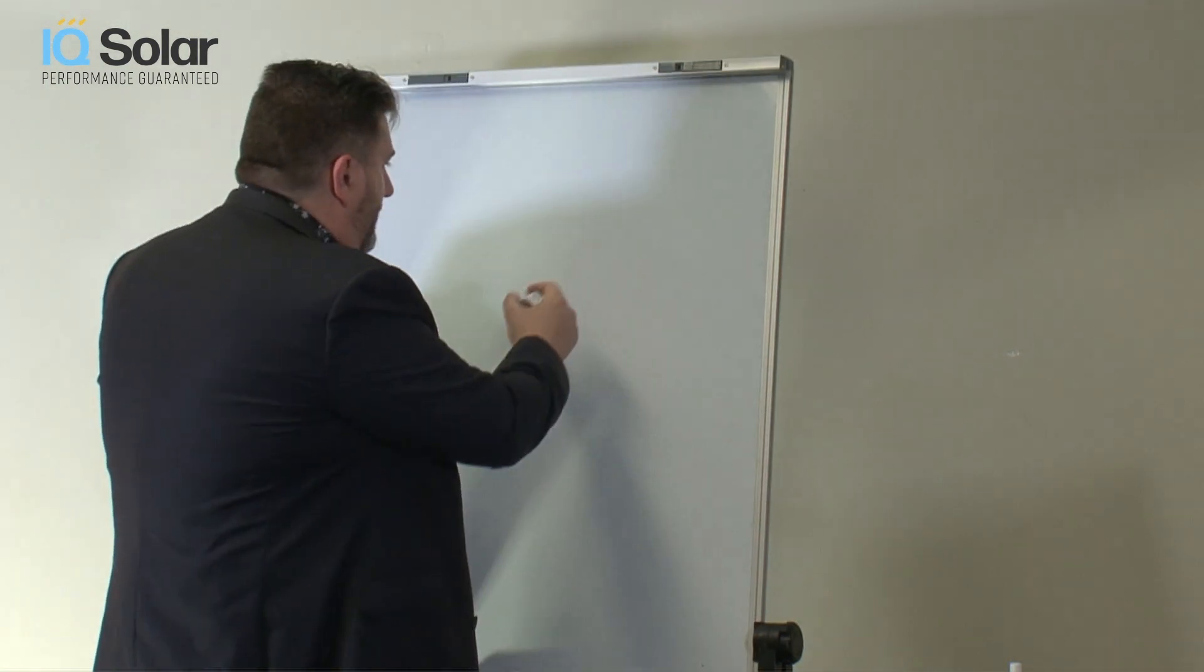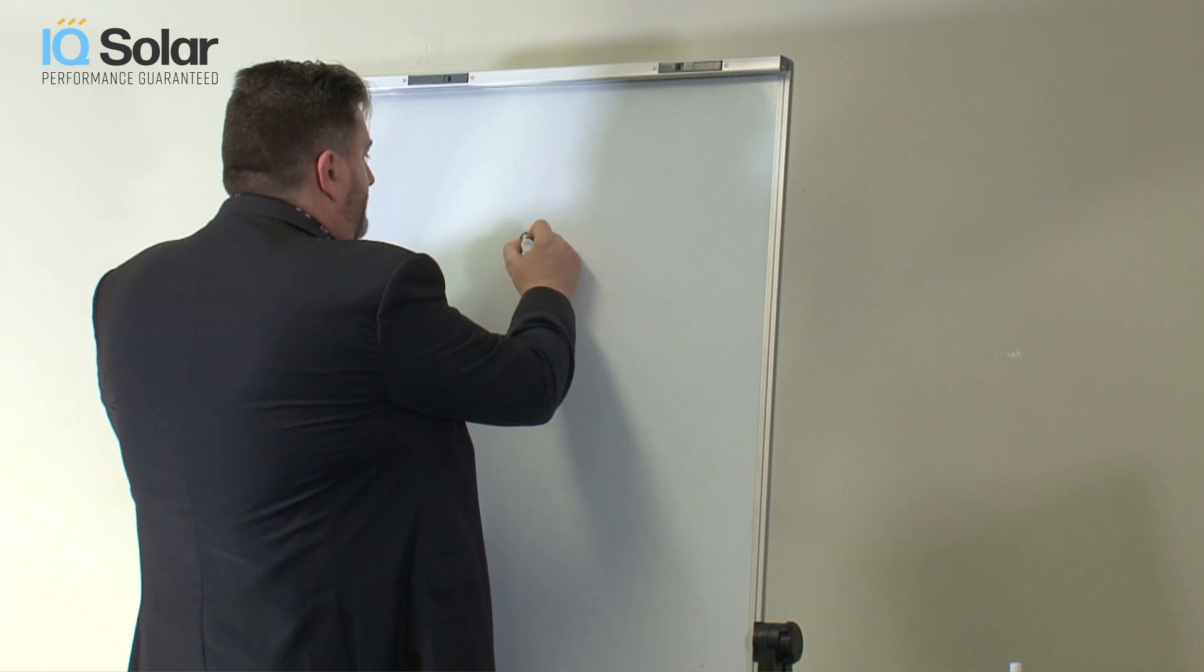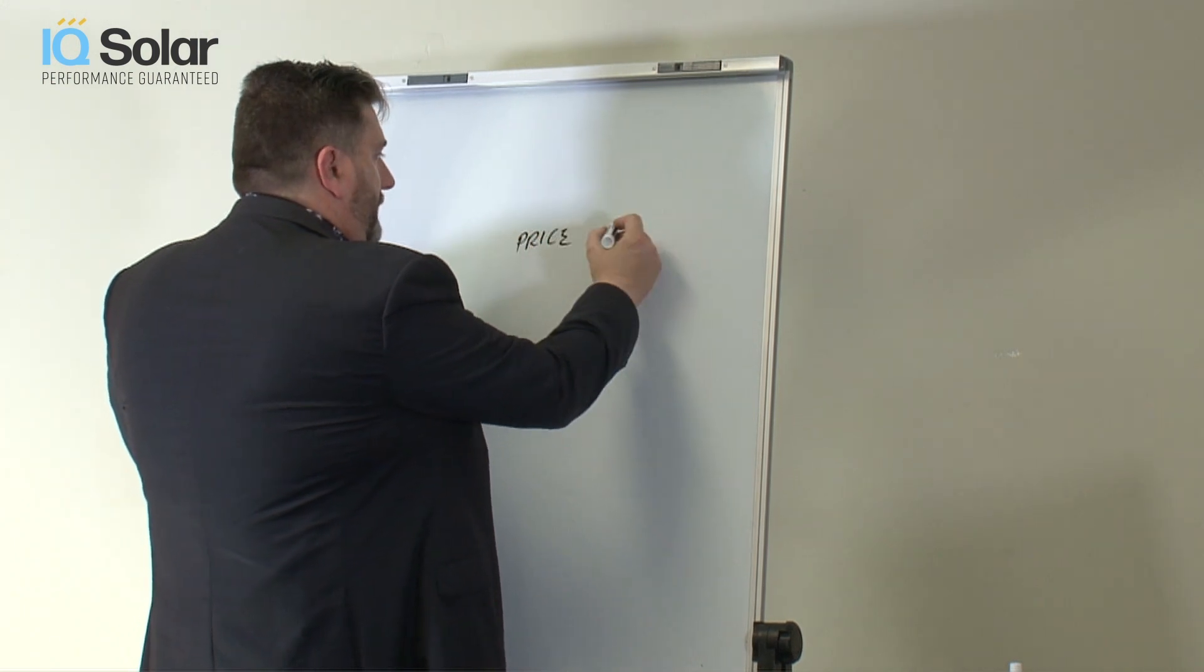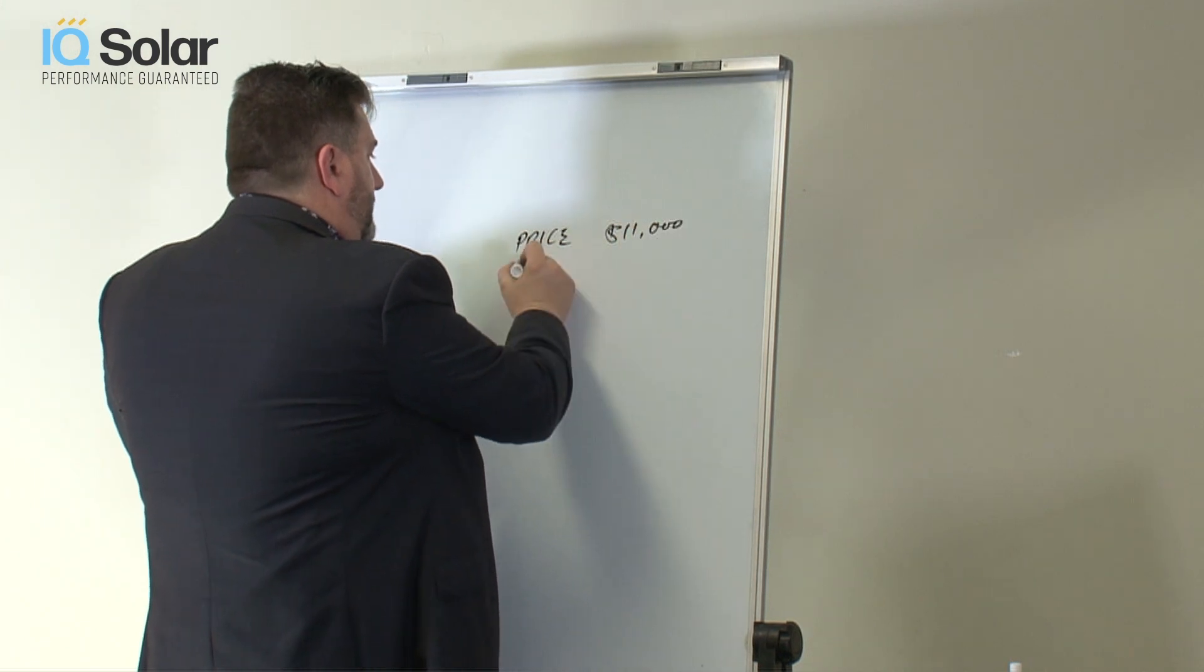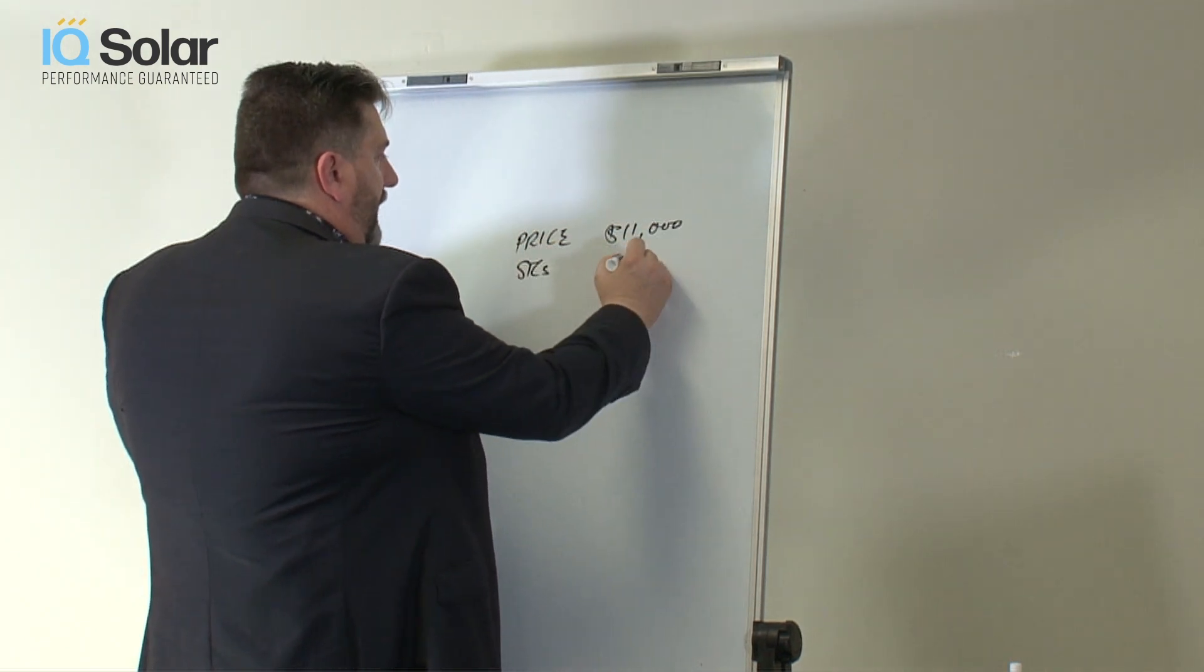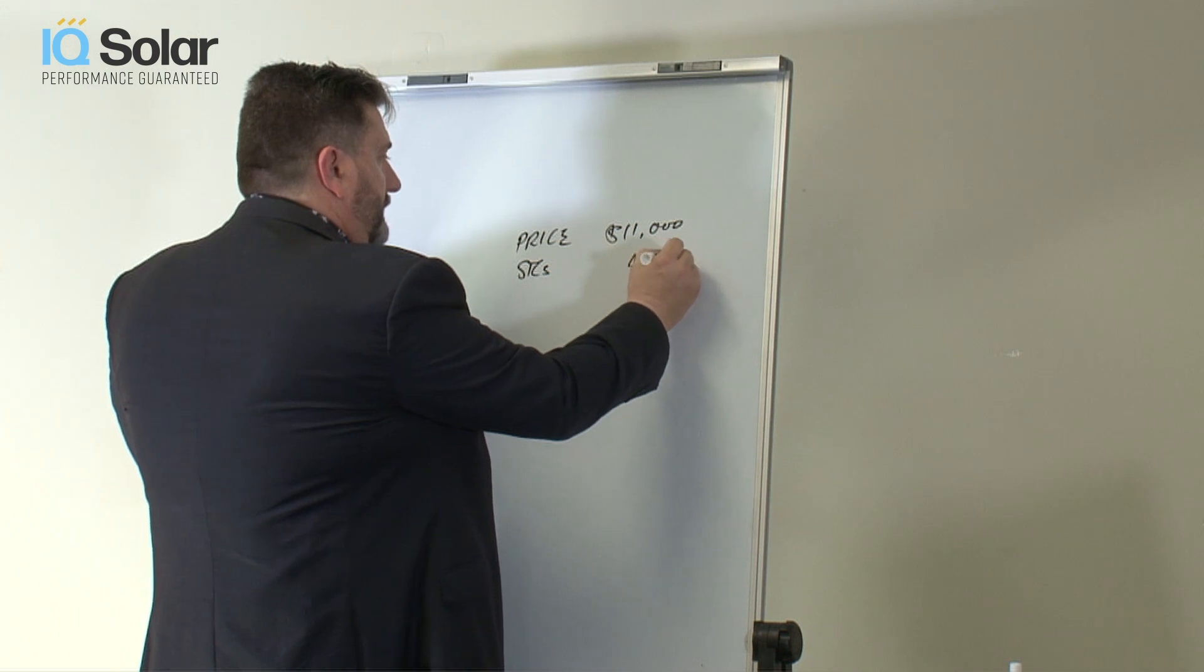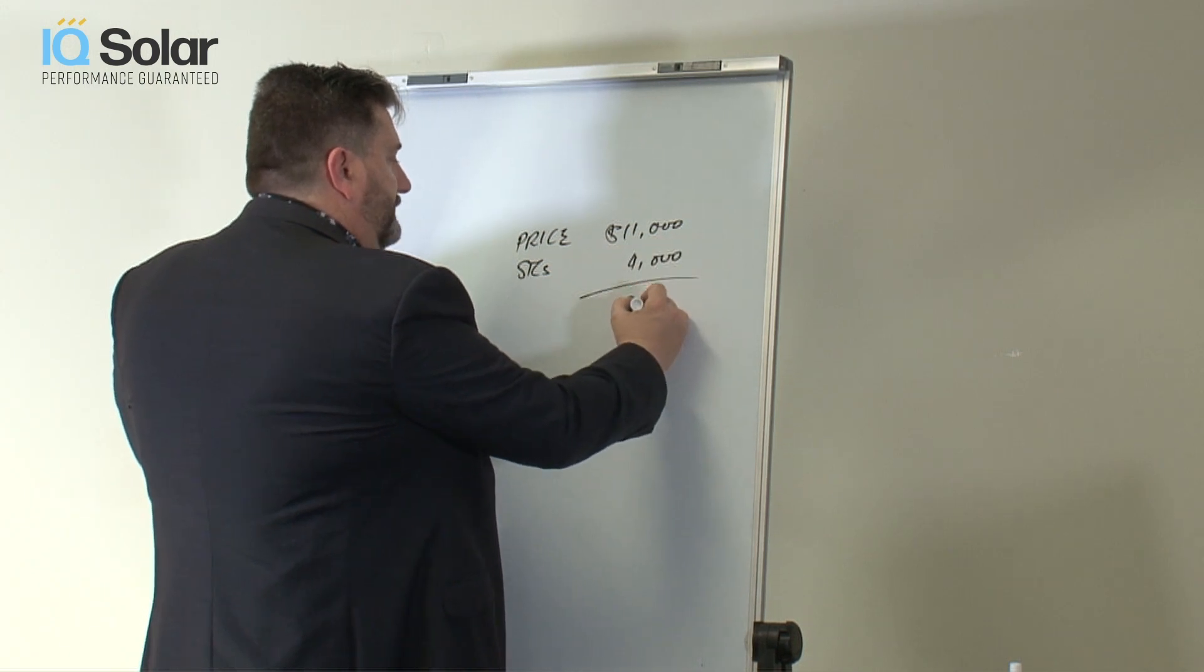What you'll see when you get a quote is a price - a system might cost $11,000, the STC's as they're called might be worth say $4,000, and therefore your cost is going to be $7,000.